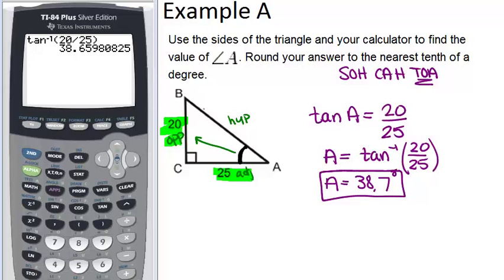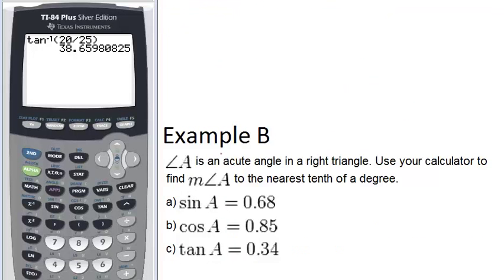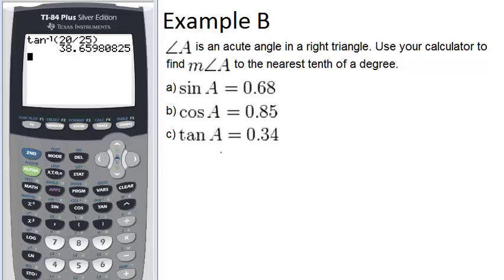Now let's go on to example B. Angle A is an acute angle in a right triangle. Use your calculator to find the measure of angle A to the nearest tenth of a degree. So in this case, we're looking at three different examples. Angle A is going to be different in each case. And we're given the ratio for sine, cosine, or tangent for angle A in each case.